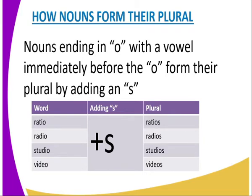We have the word 'studio' — with the vowel I before the O — and with the addition of S we have 'studios'. Similarly, 'video' — before the O we have the vowel E — so adding S gives us 'videos'.